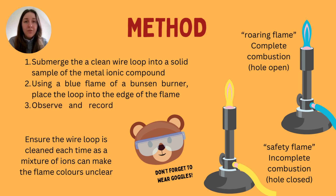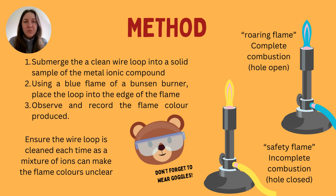When using a Bunsen burner, there are two different types of flames. The first is often called the safety flame. It's not safe to touch — it is still a flame and a fire source — but it is called the safety flame because it is a less hot flame compared to the blue flame. This is because the safety flame shows incomplete combustion, as the hole on the Bunsen burner is closed.